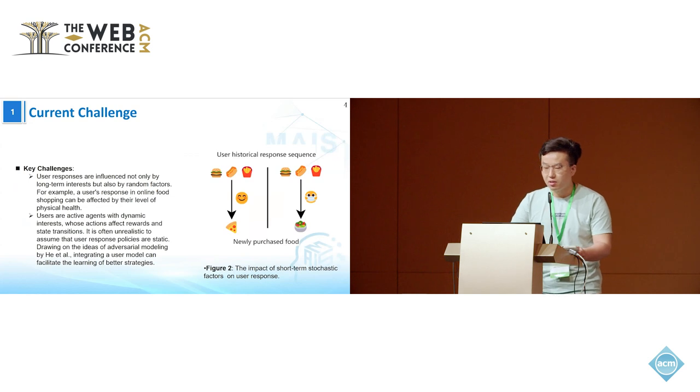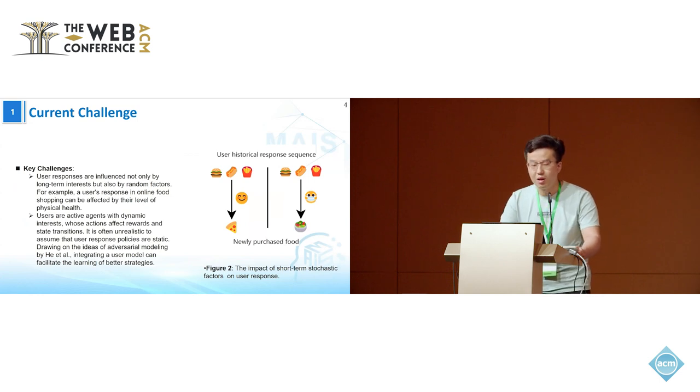Currently, the task of ad allocation faces two major challenges. First, user response is influenced not only by their long-term interests, but also by short-term random factors. Figure 2 illustrates a user who likes junk food. When in a good mood, they might choose to buy pizza, but if they suddenly catch a cold, they are more likely to choose healthier foods, such as a vegetable salad.